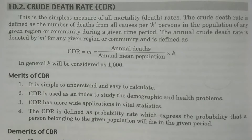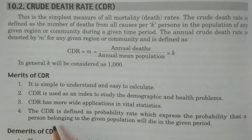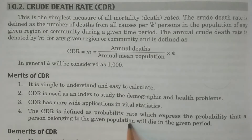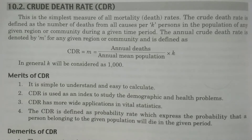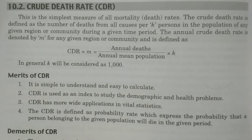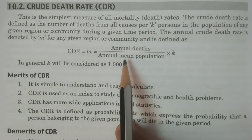In vital statistics - that is the study of demography, the statistics related to vital events - CDR has many applications. CDR is defined as a probability rate which expresses the probability that a person belonging to a given population will die in the given period. It is a proportionate value - a rate, a ratio, or a probability - representing the ratio of deaths to the population.